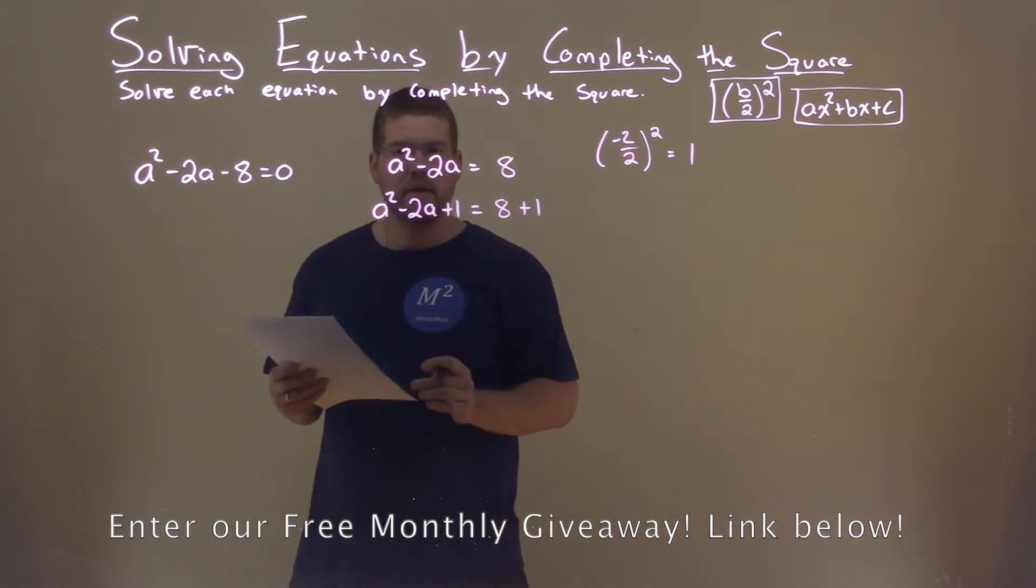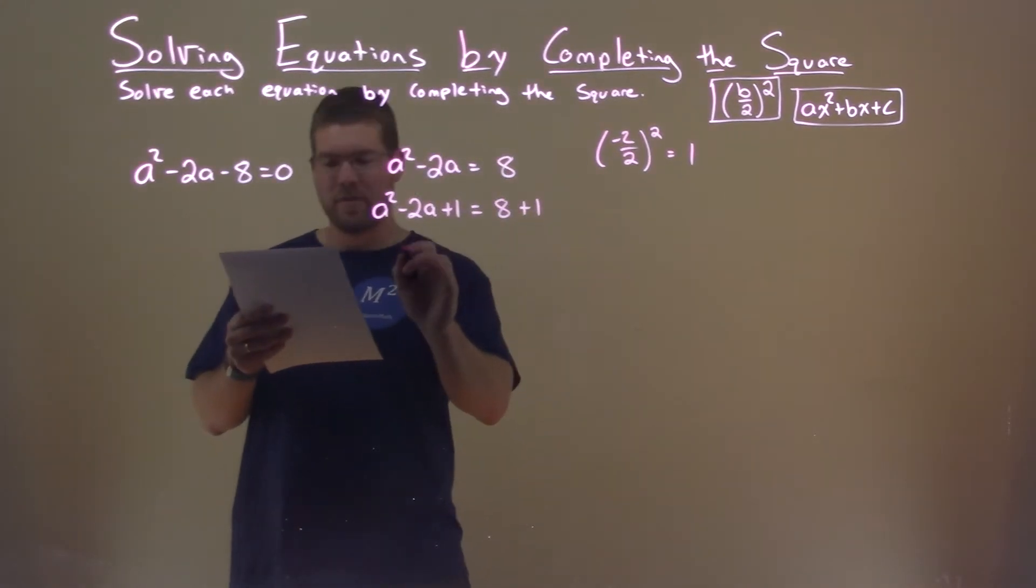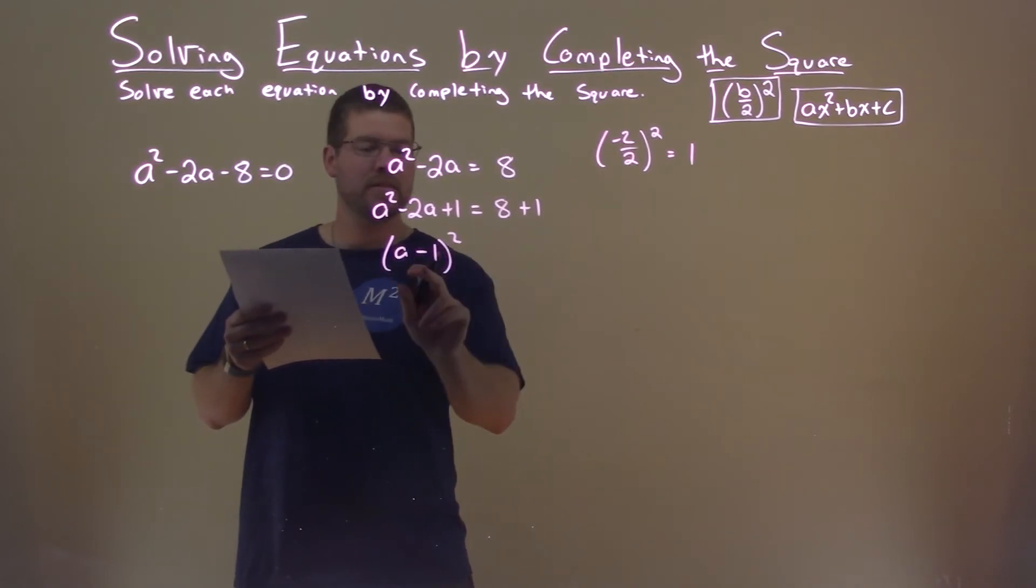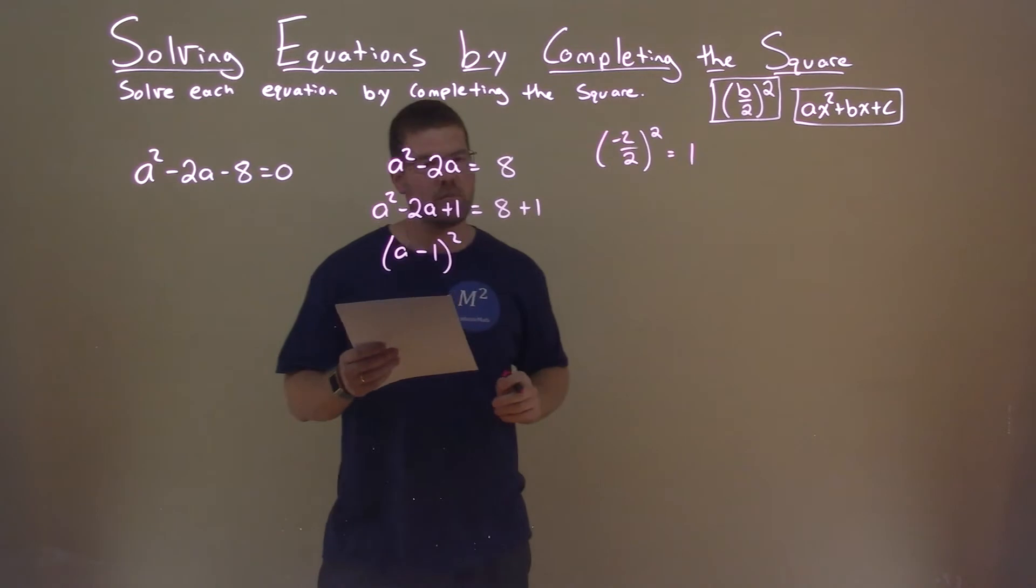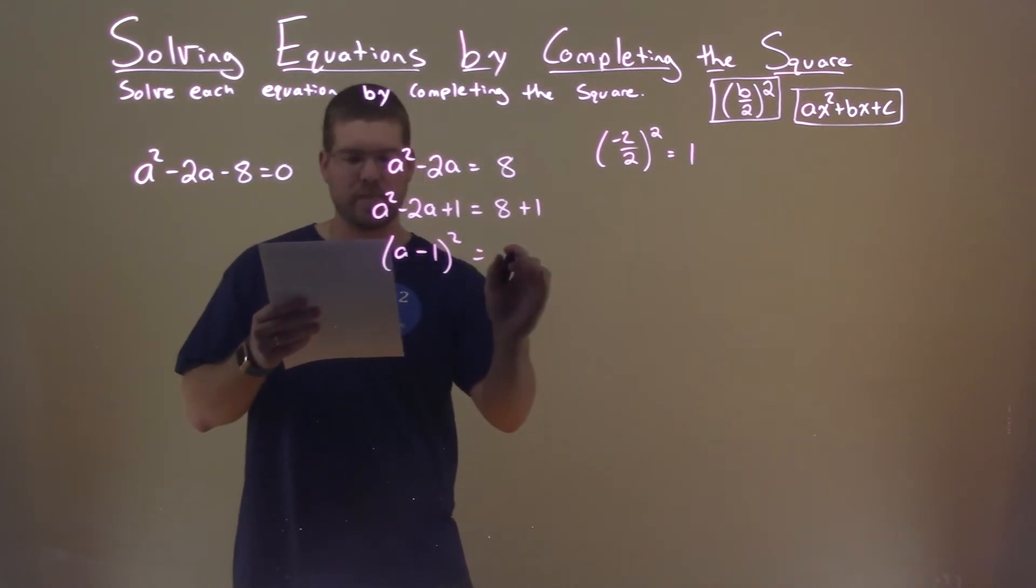So now from here, we can turn this into a perfect square. a minus 1 squared is the same thing as a squared minus 2a plus 1, and 8 plus 1 is a 9.